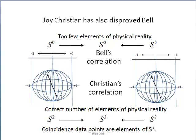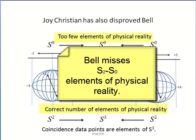The data set used by Bell in its first equation has too few elements of physical reality, whereas Christian's has counted them correctly. Bell misses S^2 minus S^0 elements of physical reality. What does this lead to?